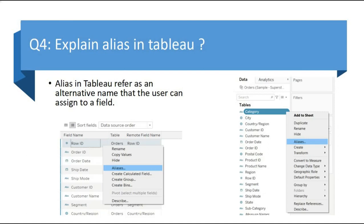The next question is: explain alias in Tableau. An alias in Tableau refers to an alternative name that the user can assign to a field. As we can see in the screenshot, you right-click on any field and you can use the alias option in Tableau.